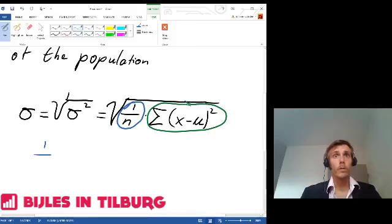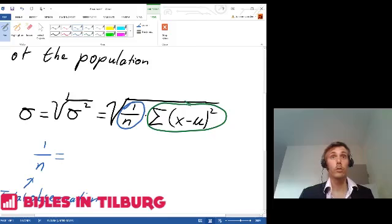The blue part, 1 divided by n. The n equals the total observations. In this case 4, so it will be 1 divided by 4.